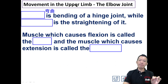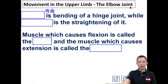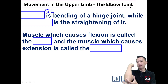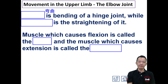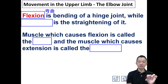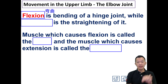Movement in the upper limbs — the elbow joints. So how can our elbow joint move? I'll give you the basics first. Flexion — so what is called flexion? It's the bending of the hinge joints.